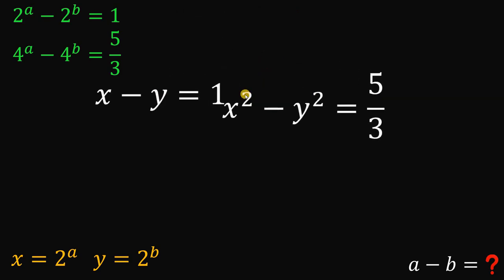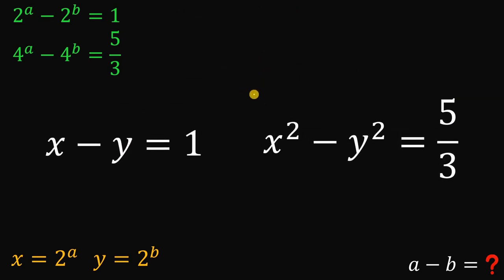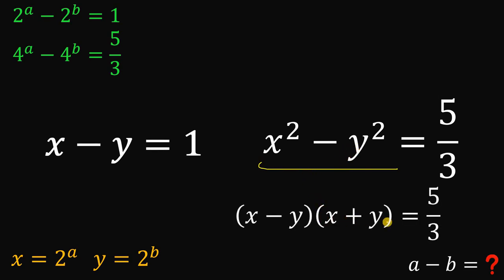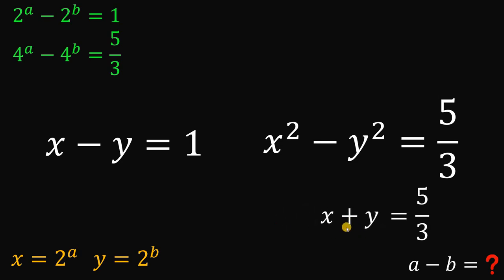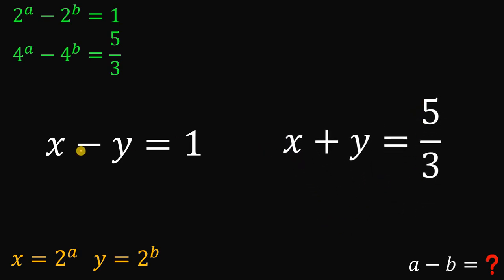Using these two equations, our goal now is to solve for the value of x and y. Here we have a difference of two squares — x squared minus y squared — and we can factor this nicely as x minus y multiplied by x plus y. Take note that x minus y is equal to 1, so we can replace that with 1. And 1 times x plus y is simply x plus y. So the second equation becomes x plus y equals 5 over 3.